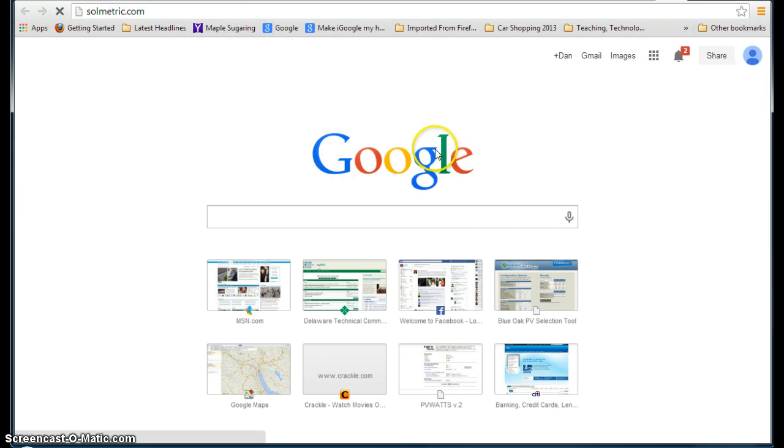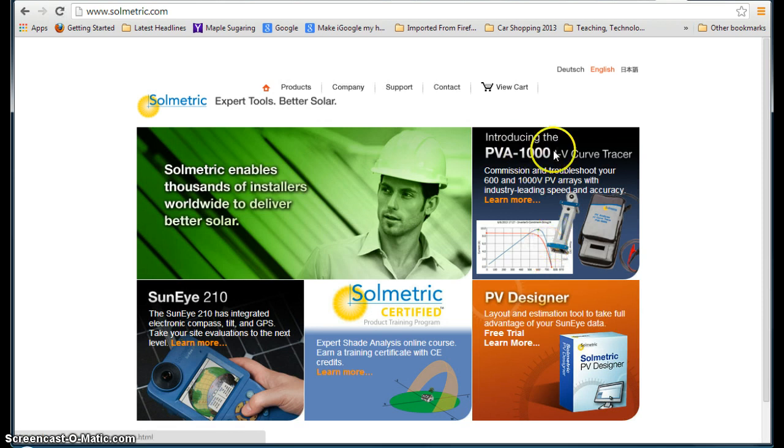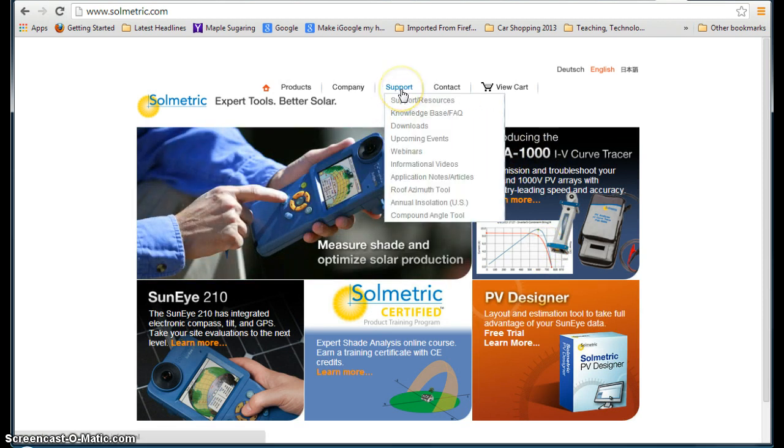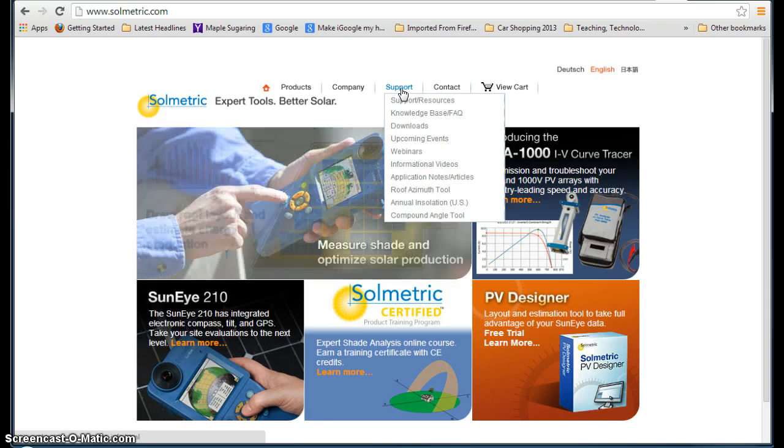Solmetric is the manufacturer who makes the SunEye and the Pathfinder, which is the older version of the SunEye. They have a lot of other tools on their website. The one we're going to go over today is the tilt and orientation lookup. So you go to Support,